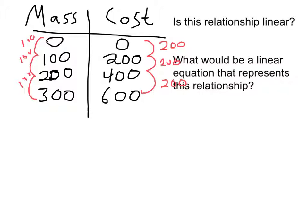Next question — now that I've written all over it — is: what would be a linear equation that represents this relationship? So here we're trying to come up with the algebraic expression. I'm going to use M to represent mass and C to represent cost. This is pretty easy because cost goes up by 200 and mass goes up by 100 every time, which means cost is always double the mass. C is the dependent variable — the cost depends on what the mass does — so it goes on one side of the equation. C equals 2 times whatever M is. So if I know my mass, I can predict my cost by multiplying by 2.